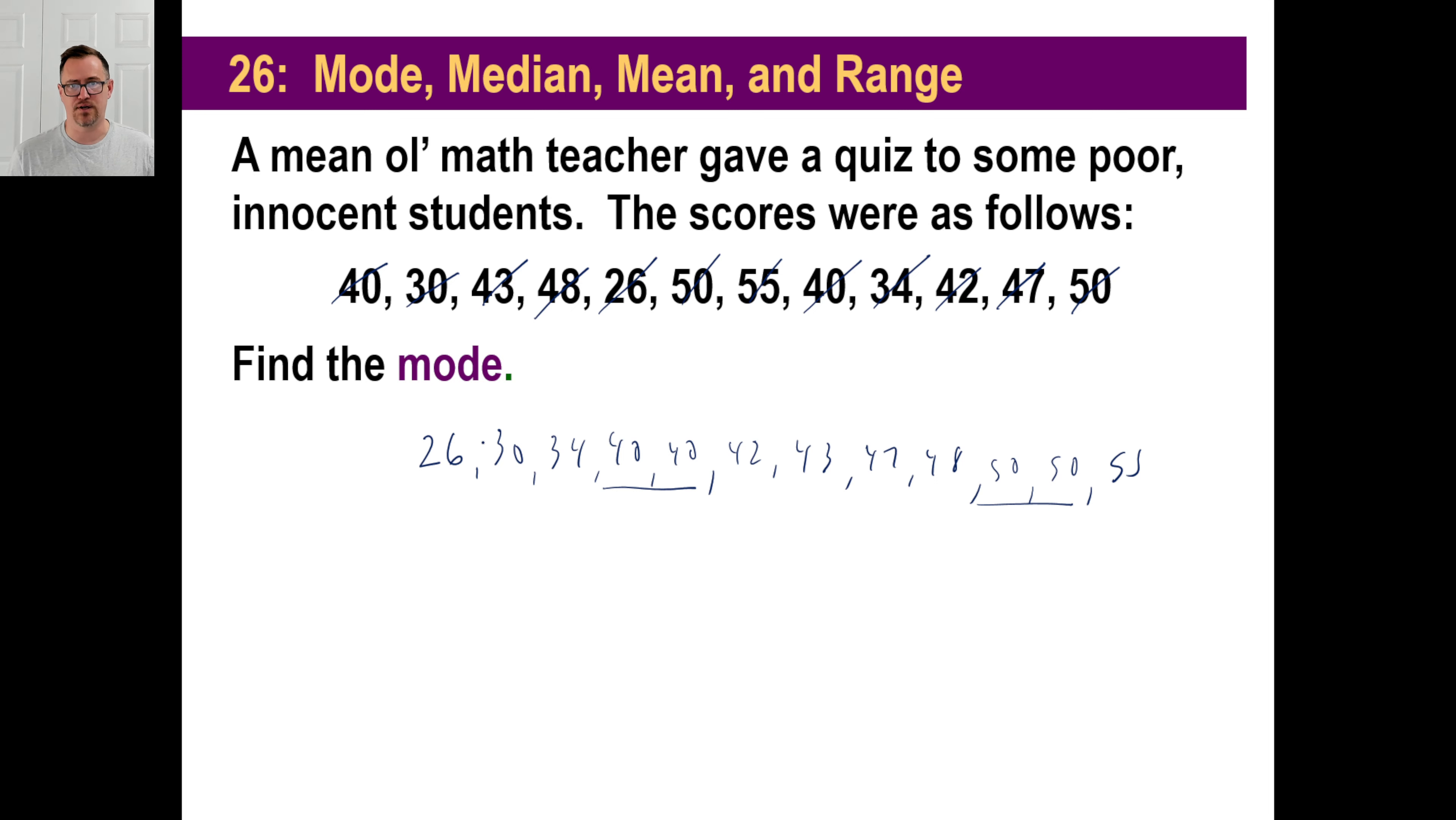There are, however, 12 numbers in this set, which means if you do 1, 2, 3, 4, 5, 6, that's right down the middle right there. So what you're going to have to do is you're going to have to pick both of these numbers in the middle. So if you do that, look to the right. 1, 2, 3, 4, 5 to the right, and then 1, 2, 3, 4, 5 to the left.